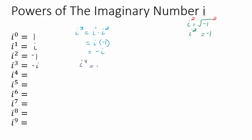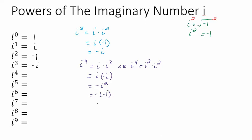There are a couple different ways to approach i to the fourth. We could say i to the fourth is i times i to the third, or we could say i squared times i squared. The strategy is to break it down into something we already know. If I think of it as i times i to the third — i to the third is negative i — that gives negative i squared, which is 1. Alternatively, i squared times i squared is negative 1 times negative 1, which is also 1.